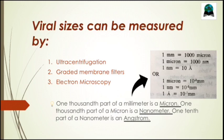In earlier days, viral sizes were estimated by using membrane filters with different pore sizes. Another method is ultracentrifugation, in which the virus particles settle at the bottom of tubules at a rate proportionate to their sizes — the heavier or larger the virus particle, the sooner it will settle at the bottom, and the lighter it is, the more time it would take to settle down. Another method is electron microscopy, in which the size and shape of viruses can be directly determined in purified preparations of virions.